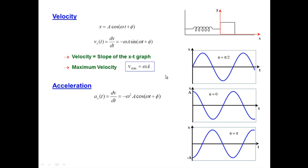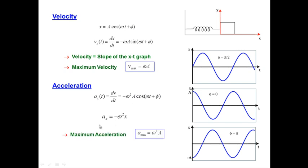Moving on to acceleration: starting with the velocity expression, we differentiate with respect to time once more. dv/dt is the acceleration in the x direction, and that introduces another factor of omega, and the sine function becomes a cosine upon differentiation. This gives an expression where the maximum acceleration is everything out in front of the cosine function: minus omega squared times a. We can also write a_x as minus omega squared times x, illustrating that when x is at its largest value, acceleration is at its largest value in the negative direction.